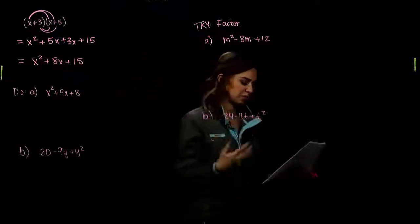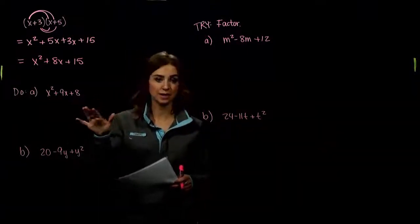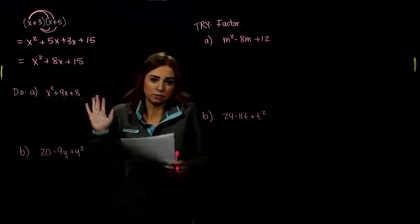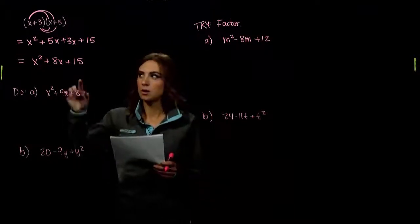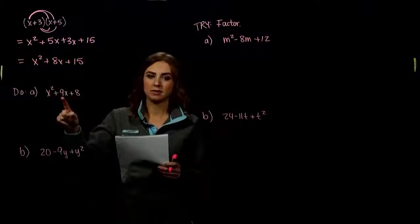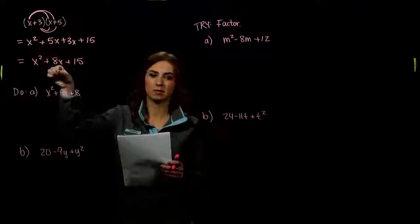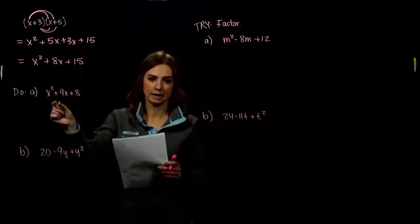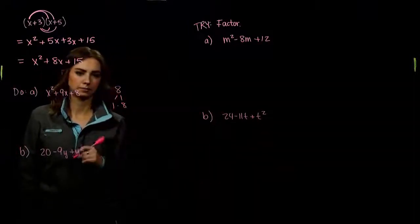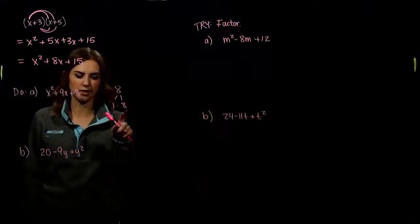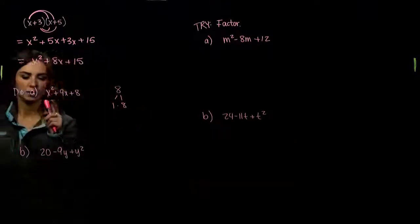We'll do a bunch of examples. For this first one, everything is positive, so we know our signs are going to be positive. We need things that multiply to give us 8 but add to give us 9. Looking at the factors of 8: 1 and 8 — if we multiply those we get positive 8, if we add those we get 9. So those are the factors we need.